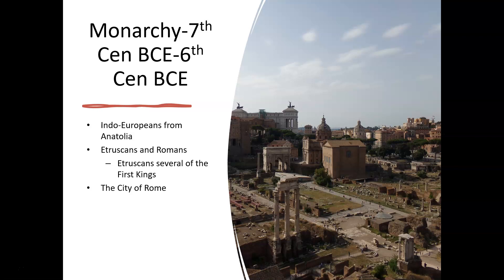The Etruscans made up several of the first kings of Rome, and the interpretations of the Romans of the Etruscans could be problematic because the fall of the monarchial period of Rome actually occurs in a story in which an Etruscan king's son, a prince, rapes a Roman aristocrat's daughter. This becomes known as the myth of Lucretia. Lucretia was raped, and in response the Romans rose up, ousted the Etruscan king, and created the Roman Republic.